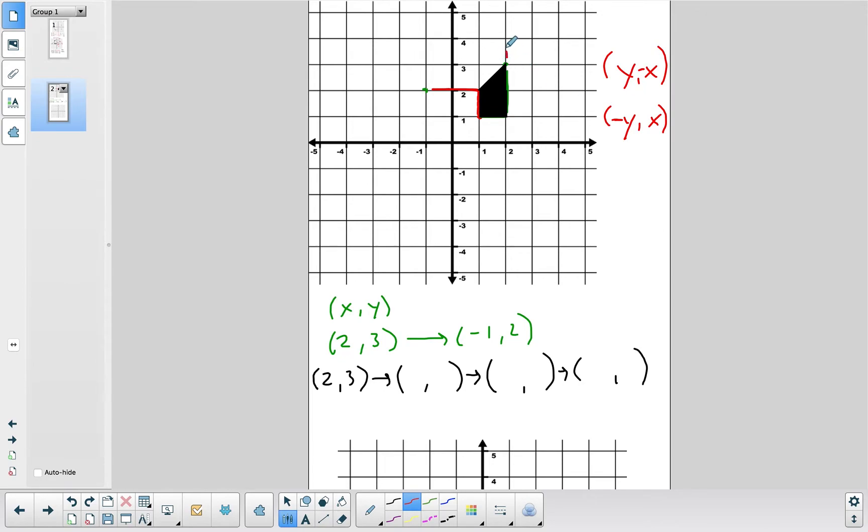So if we're trying to go from this direction to this direction to figure out what our coordinate points are for our pre-image, we have to go 90 degrees counterclockwise. So we're going to end up using this formula here. And so with that being said, our coordinate point will end up being a negative 1 comma 2.